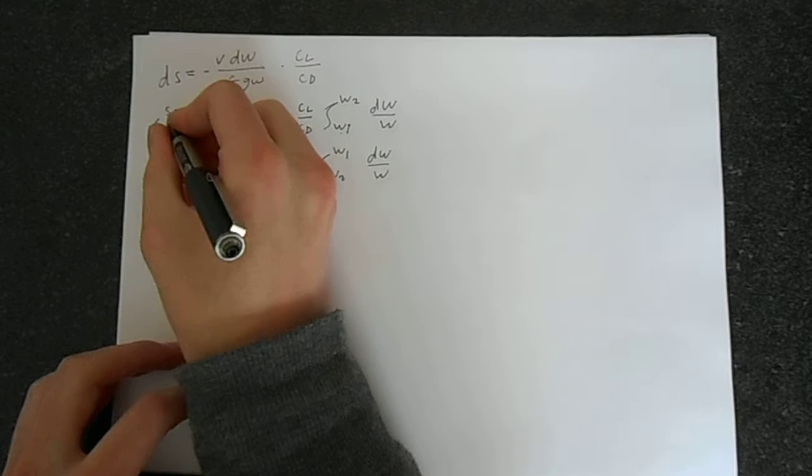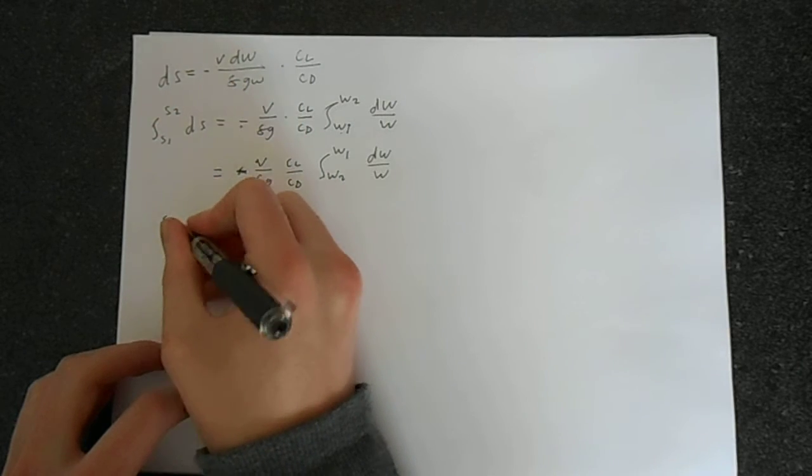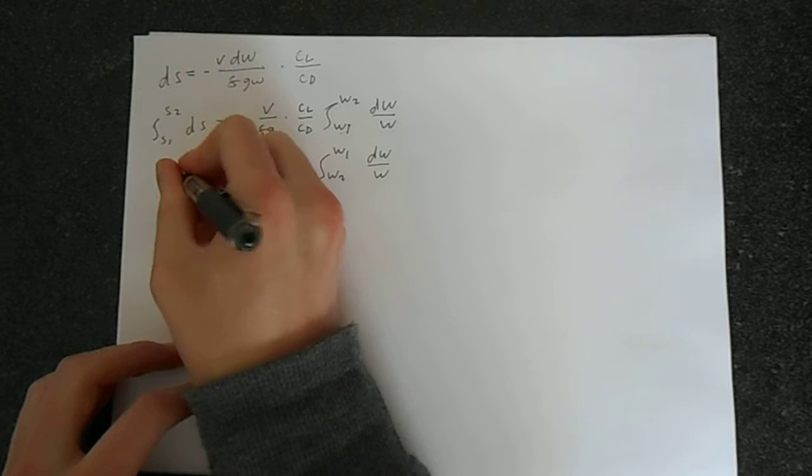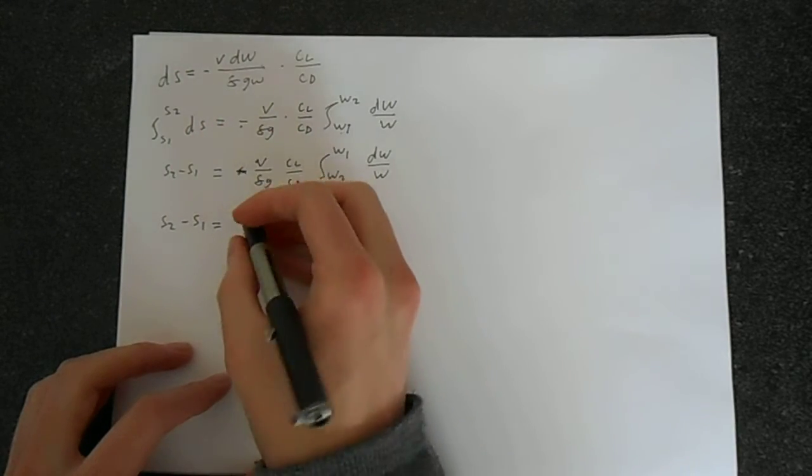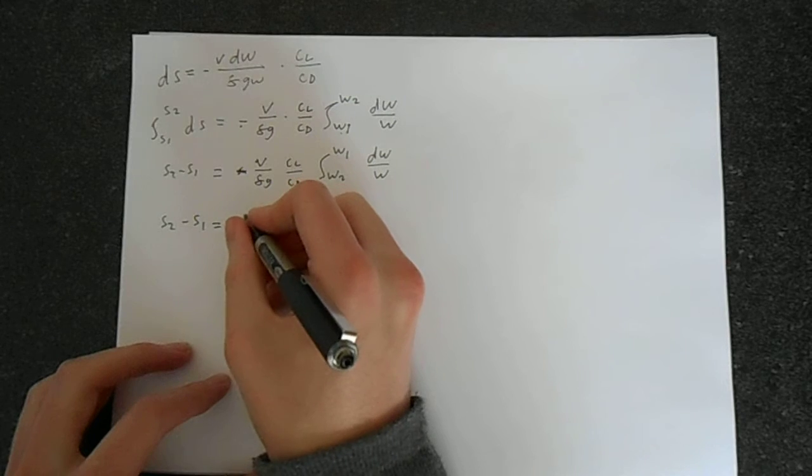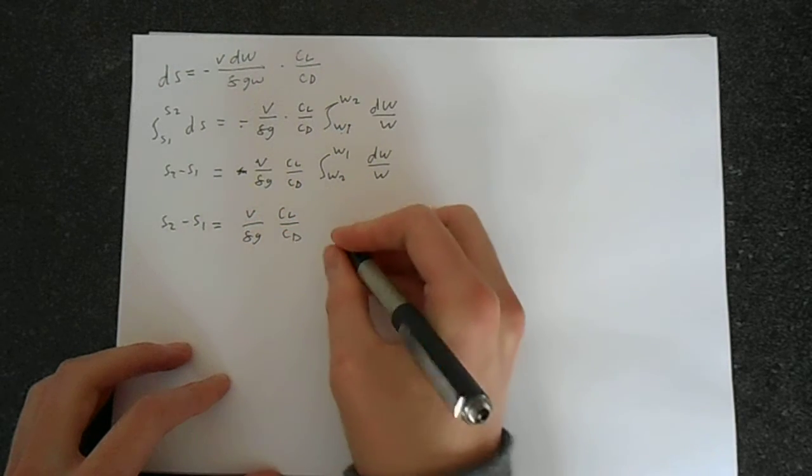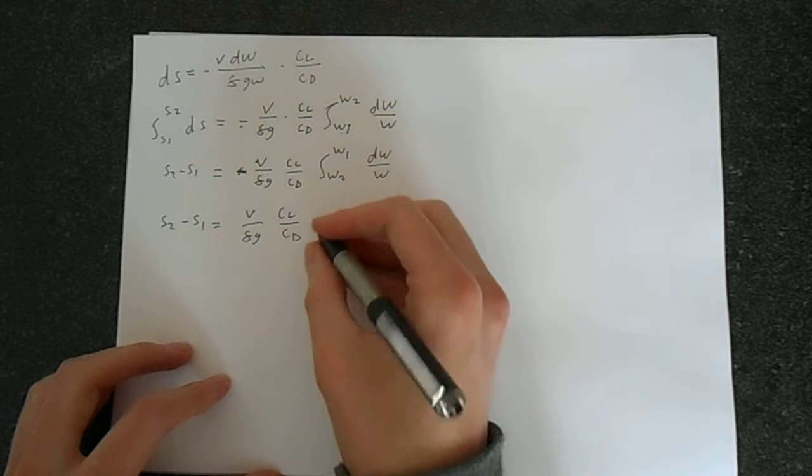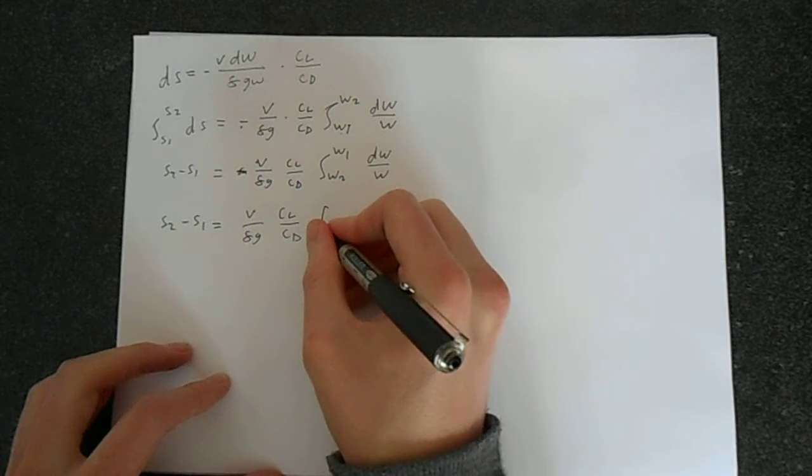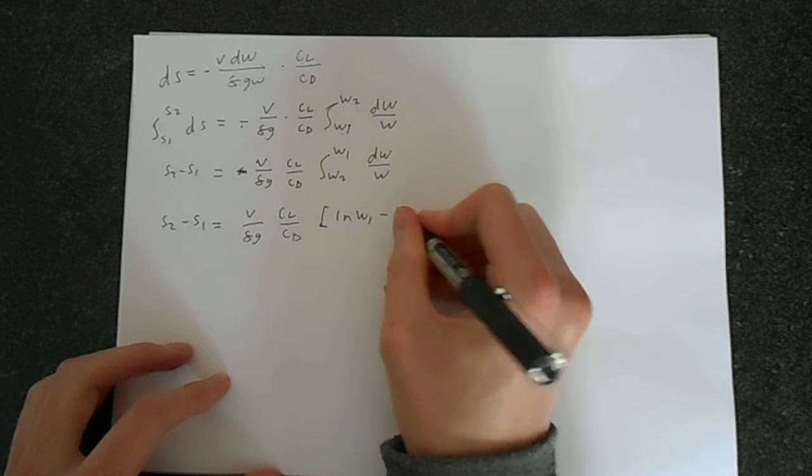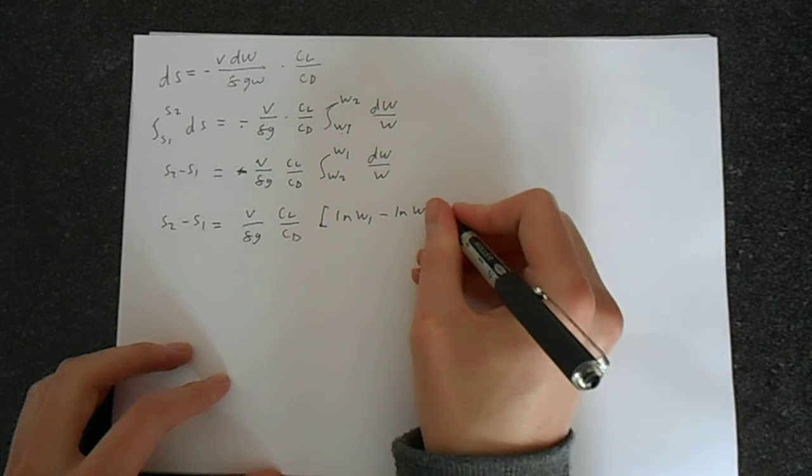Doing the integration. Well, this integration here is very obvious. We can put that in there, see if we've done the integration back there. So v over f g c_l over c_d. This integration, you should know very well...